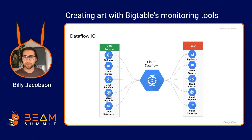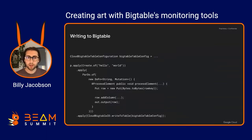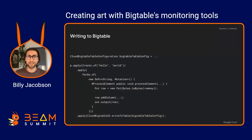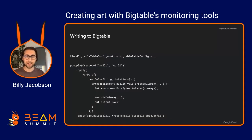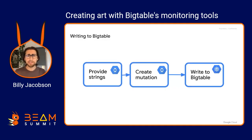Let's look at some code — all of this is available on GitHub, and I have a tutorial on how to make this art. Writing to Bigtable: writing and reading are both pretty standard. You create a configuration, here I'm just passing two strings to start my pipeline. Then I have an inline do function where I take those strings, use them as a row key to create a mutation, and then pass that to write to Bigtable.